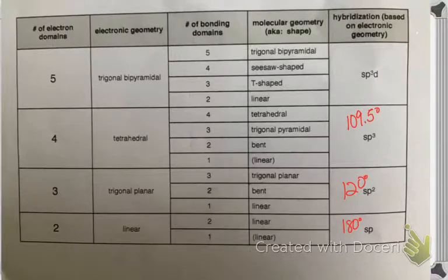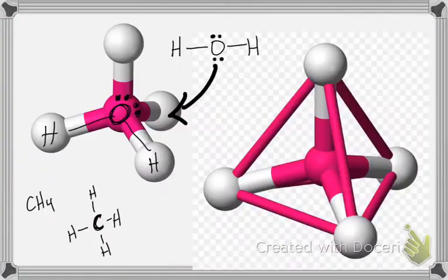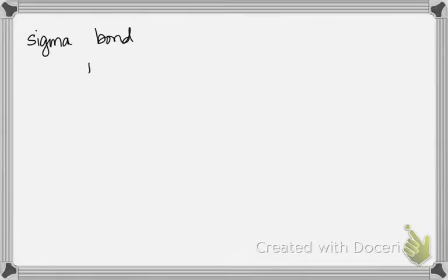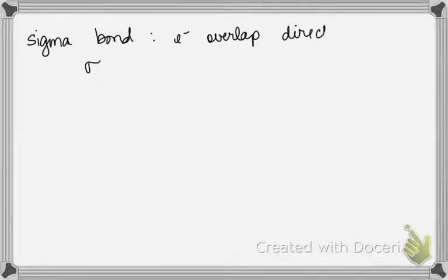The other thing I want to go over is the difference between a sigma bond and a pi bond. A sigma bond — given the sigma symbol — is one where the electrons overlap directly in between the two atoms.